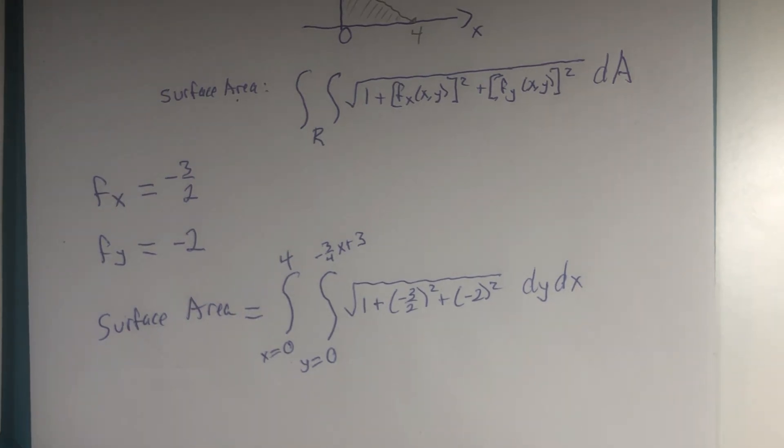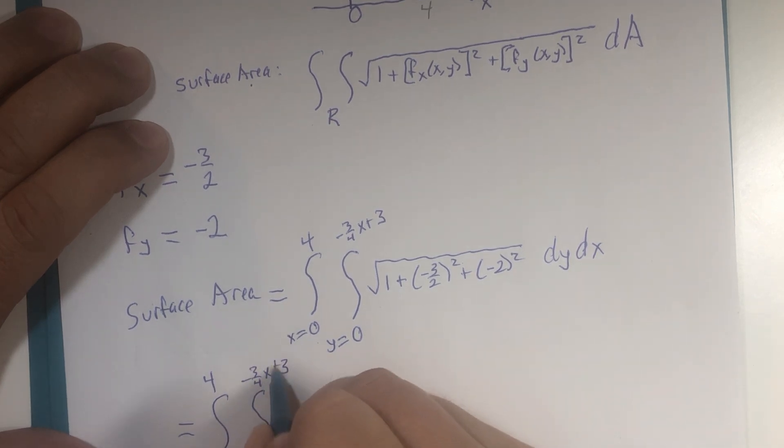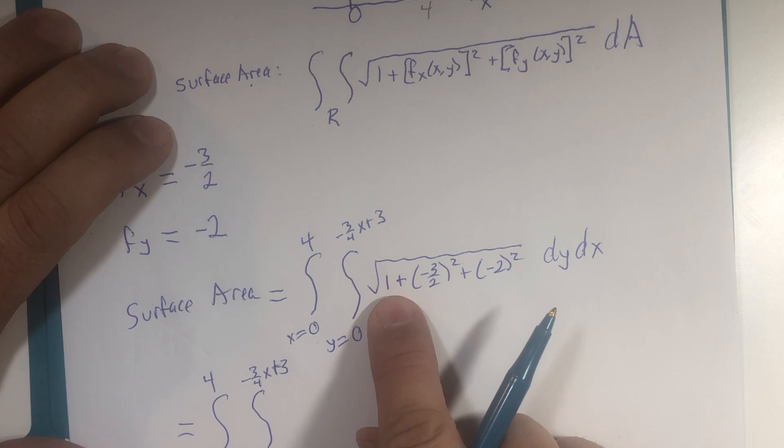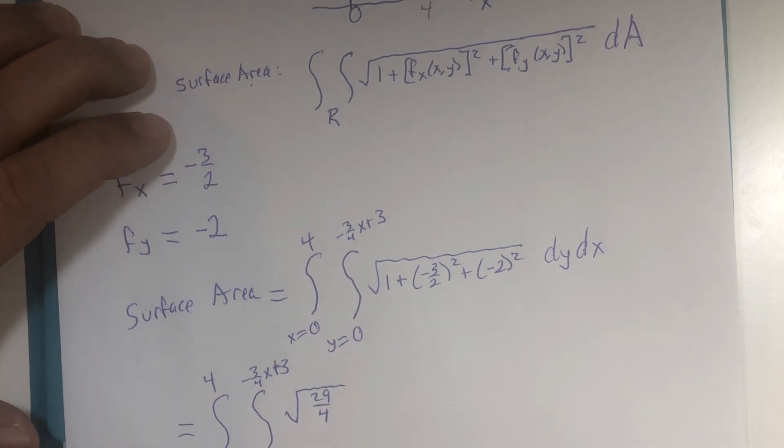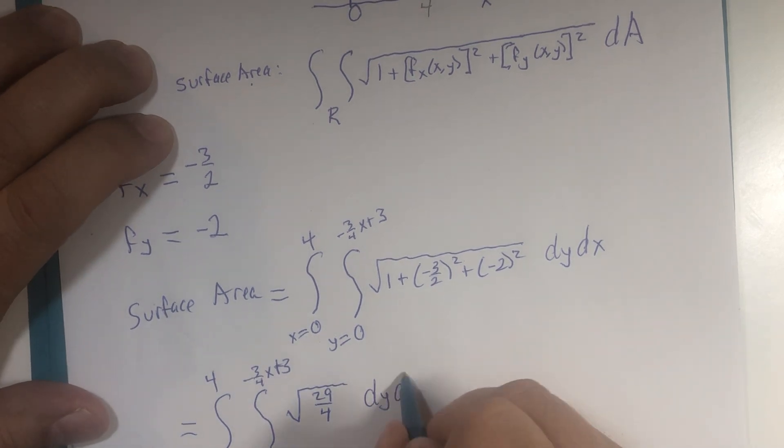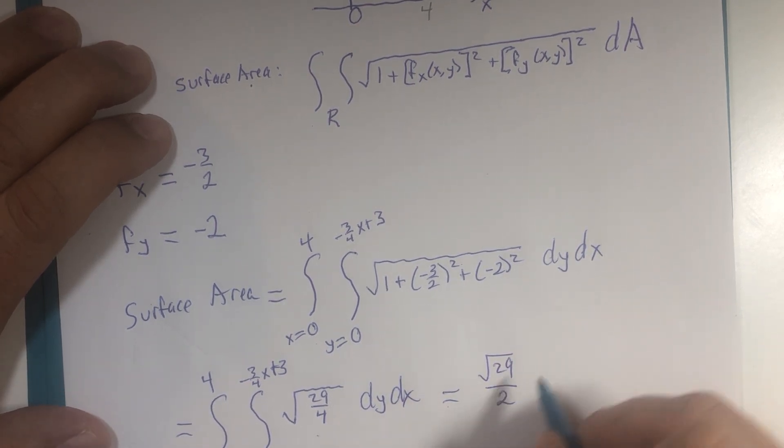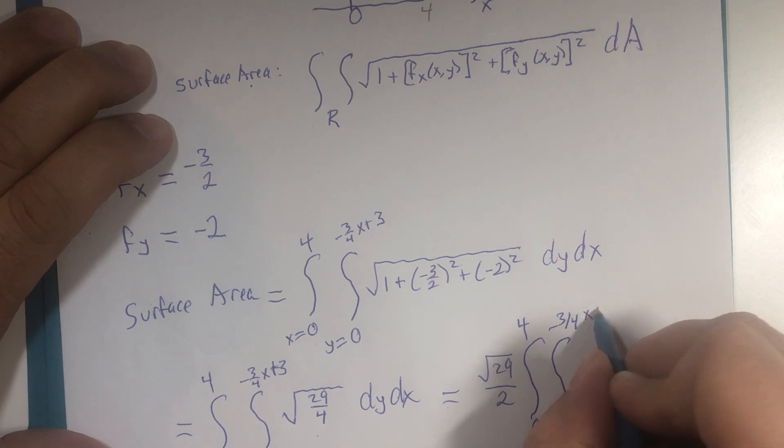Now, we're going to integrate this. Turns out to be not too bad. 0 to negative 3/4 x plus 3. That's 9/4. That's 4. That's 1. If you take a little bit of time and build some common denominators, which you should do, hit pause first. Root 29 over 4 dy dx. So, that constant may factor out. Square root of 4 is 2. 0 to 4. 0 to negative 3/4 x plus 3.